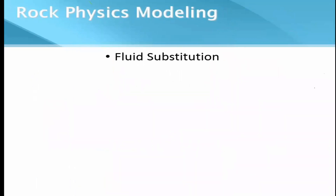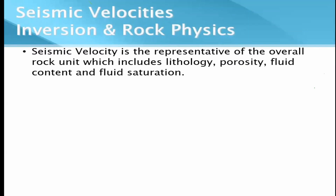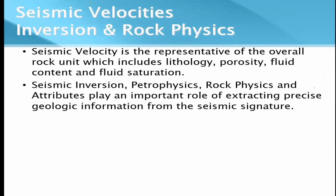In rock physics modeling we can perform fluid substitutions — we define a rock with saturations of oil, gas, and water, define the lithology, and the computer models all elastic parameters, from which seismic velocities are derived and a synthetic seismic can be generated. Seismic velocity is the basic parameter of seismic — it is essentially the contrast for the seismic method, and all the signatures of the rocks are hidden within this single parameter. It is the overall representative of the rock unit — lithology, porosity, fluids, and everything — and we have to decode this information from the seismic.